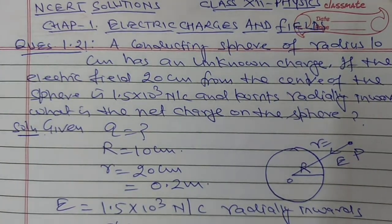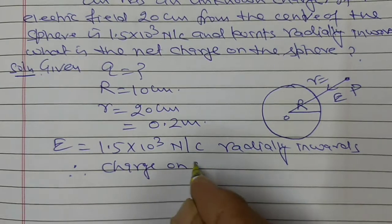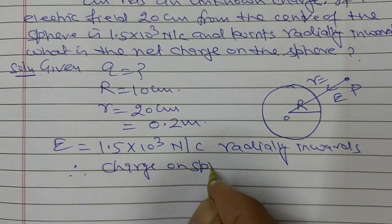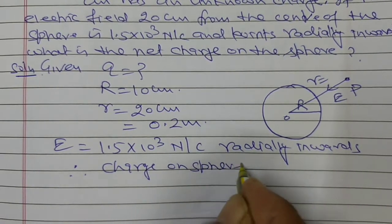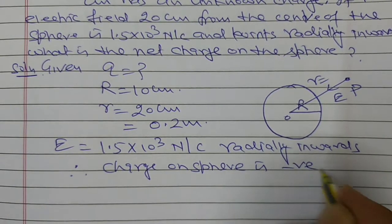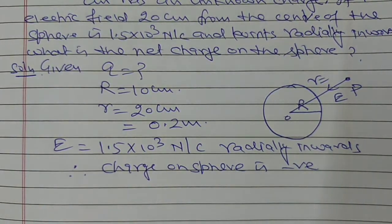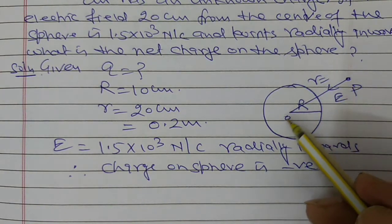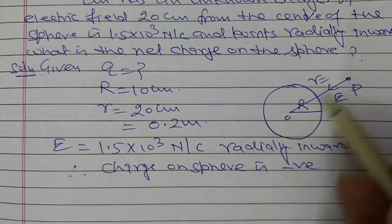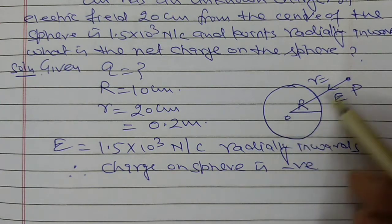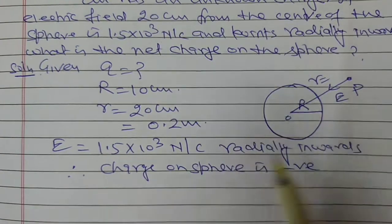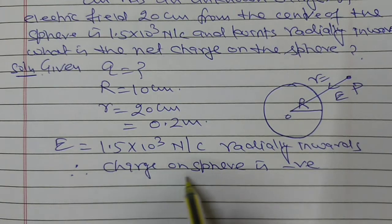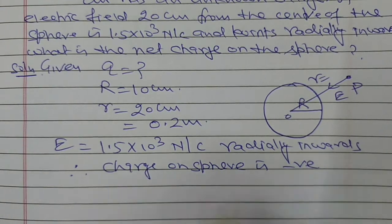Therefore, the charge on the sphere is negative, because the direction of the electric field is always towards the negative charge. The direction of electric field is towards the negative charge here, so this charge on the sphere is negative.